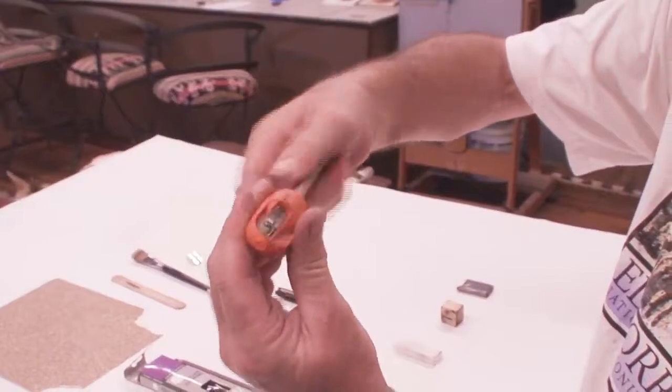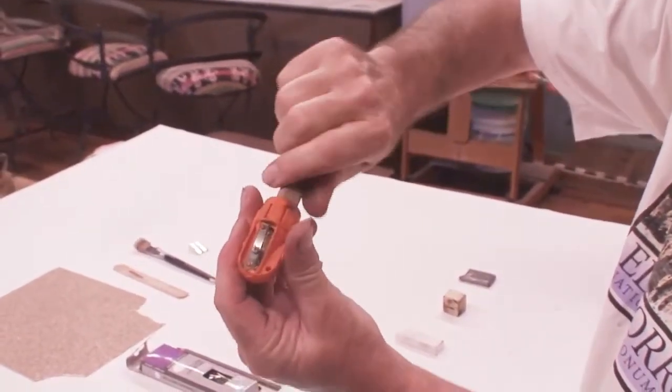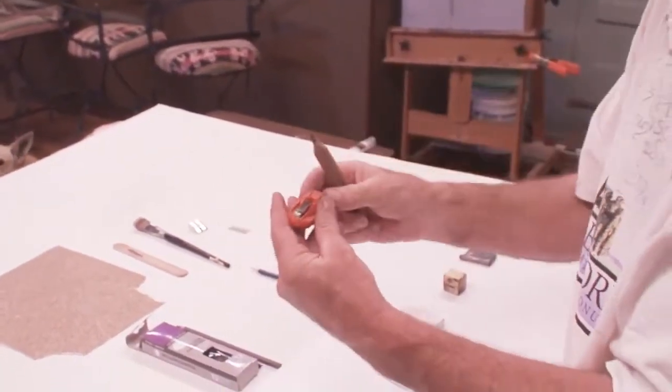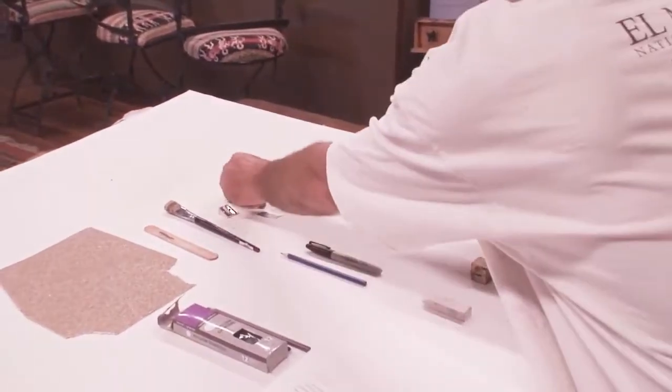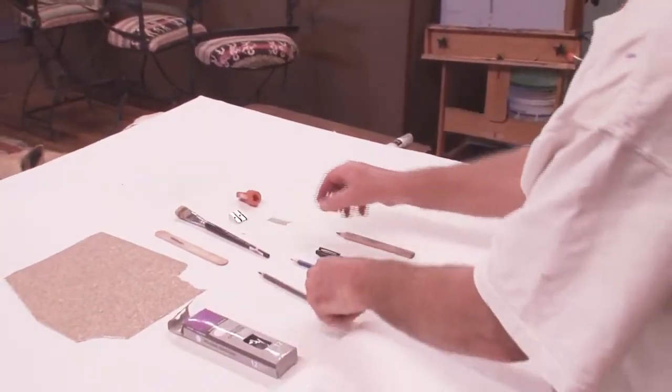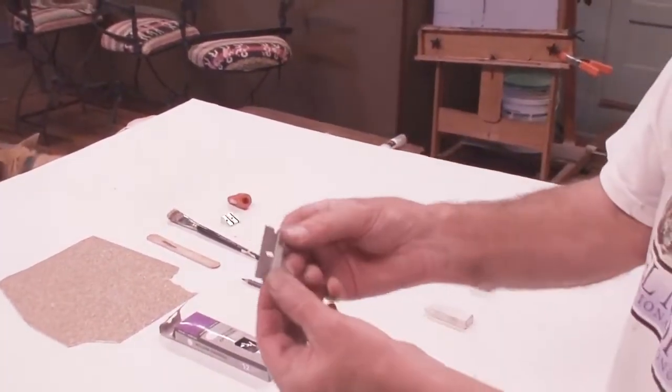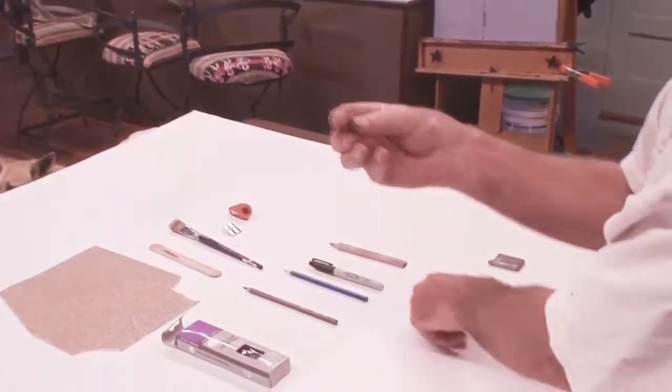I usually keep a razor blade close by so I can carve on my plastic erasers, carve on my rubber eraser, or I can sharpen any of my pencils with it. Again you don't need all these tools. These are just tools that you'll find helpful eventually.